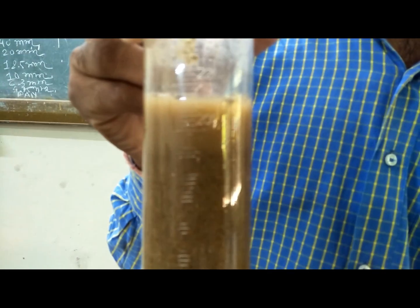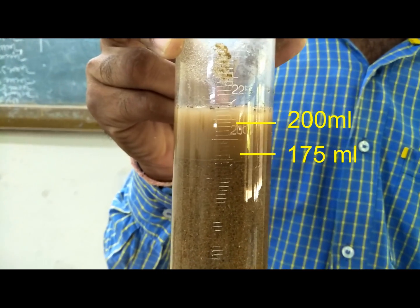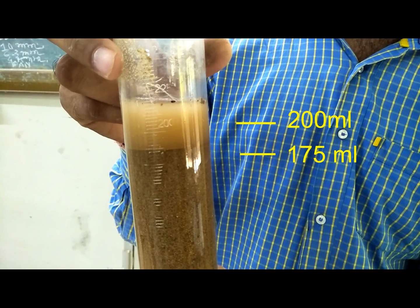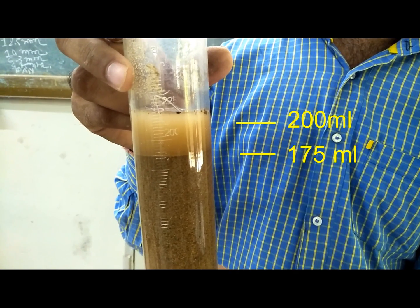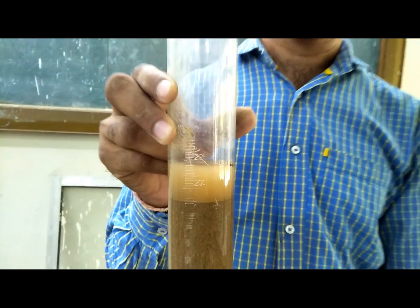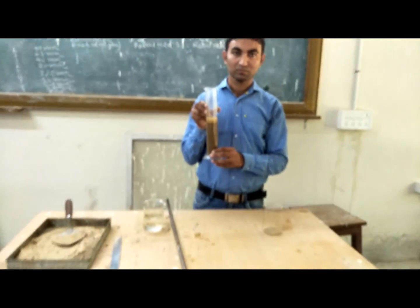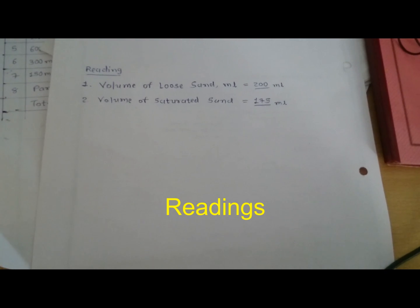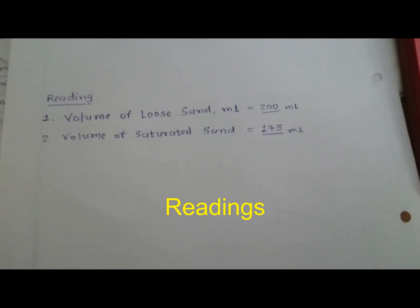You can see in the video: we have taken the volume of loose sand as 200 ml and the saturated sand reading is 175 ml. The volume of loose sand is 200 ml and the volume of saturated sand is equal to 175 ml.